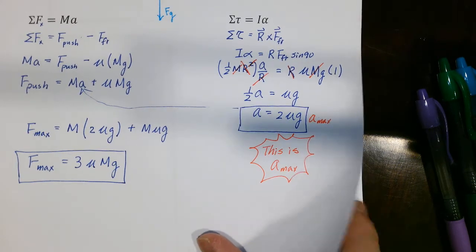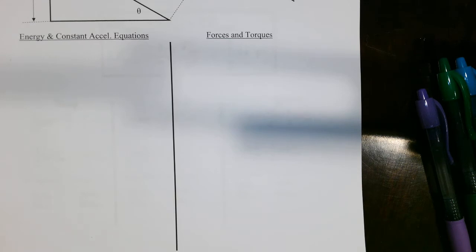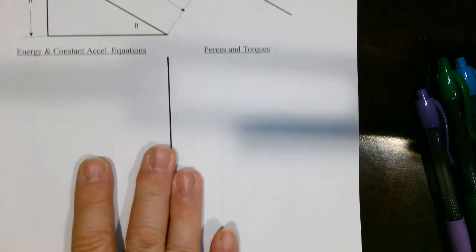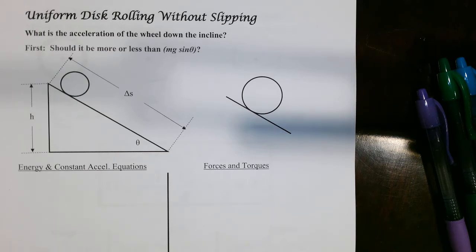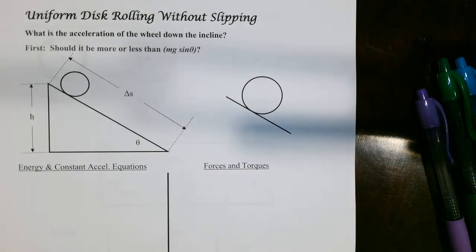Let's take a look at one more problem. We have a uniform disc rolling without slipping down an incline. What is the acceleration of the wheel down the incline? We're going to do this two different ways: one using energy considerations, and another using forces and torques (dynamics). Hopefully we'll get the exact same answer.